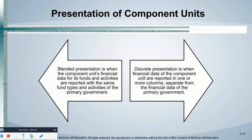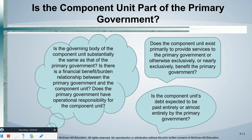That's blending versus a discrete presentation. A discrete presentation is simply when we take the component unit and report it in its own separate column. With discrete presentation, we only present at the government-wide financial statement level only — we will not present anything at the fund level. Those are the differences. Unfortunately, it's not as simple as making a choice; we can't just pick and choose. We actually have to go through another decision tree to decide whether we blend or show it as a discrete presentation.